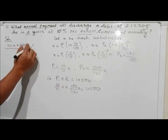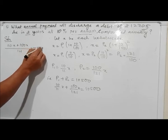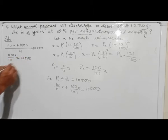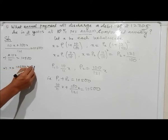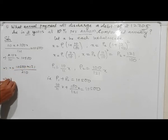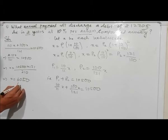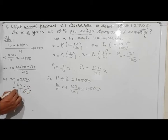Equal to: 210x equals 12705 times 121, then x equals 10500 times 121 by 210. Solving for x gives the annual installment. This is the calculation to find out the annual payment.